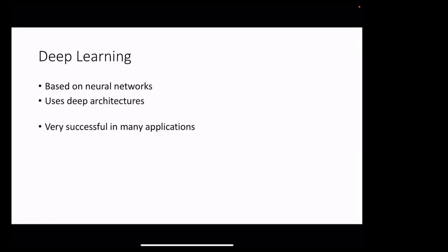The way information is processed in the human brain is what they tried to mimic. The architectures found that it can be a normal neural network, but the number of layers should be very high — that's why they called it 'deep' learning. It turned out to be a very successful approach. Many big companies like Google, Yahoo, and Facebook found that deep learning architectures work very well in real-life applications, which led to the explosion.